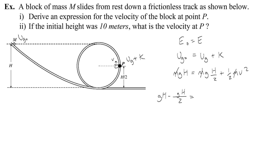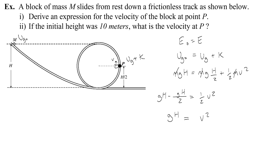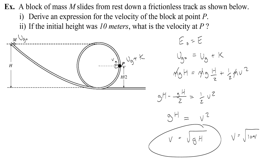This equals one-half v-squared. I can combine gh minus one-half gh, which is just gh over 2. Multiplying both sides by 2, I find that the velocity equals the square root of gh. Then plugging in 10 meters per second squared for g and 10 meters for h — the velocity is 10 meters per second.